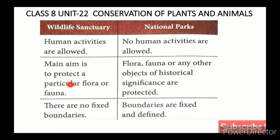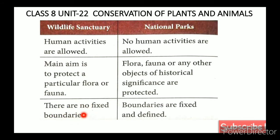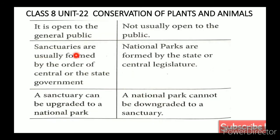In a sanctuary, particular flora and fauna - flora meaning plant species and fauna meaning animal species - and objects of historical significance are protected. In a national park, boundaries are fixed and defined.